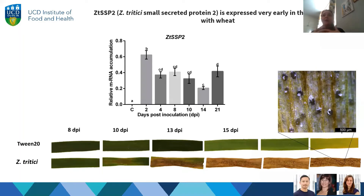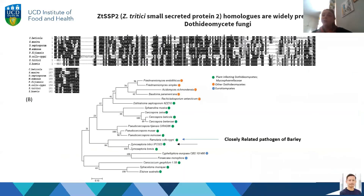We found one of these small secreted proteins that is expressed really early — at just two days post-infection — a point where you can't actually see any infection symptoms. We became quite interested in this protein. As well as being expressed very early in infection, we also found that this protein, or a close homologue, is found in many other plant pathogens. There's a closely related fungus that infects barley called Ramularia, which has a very similar protein.